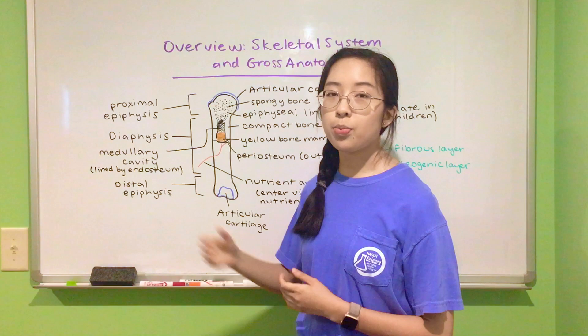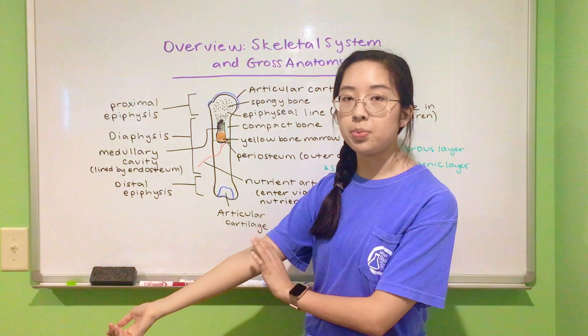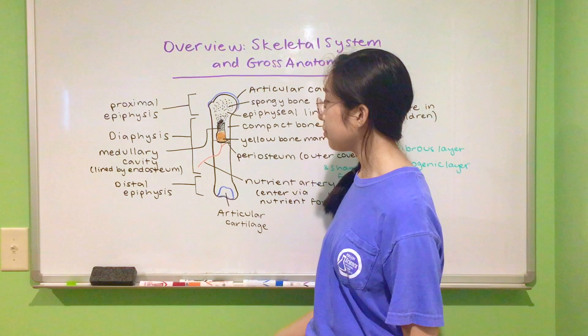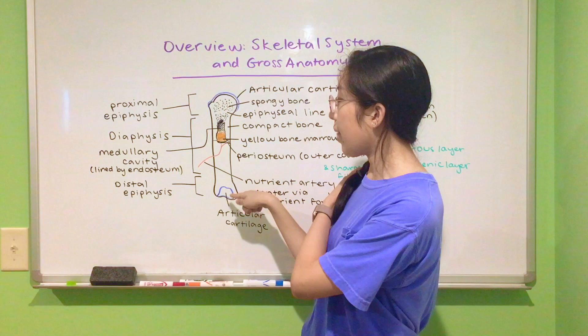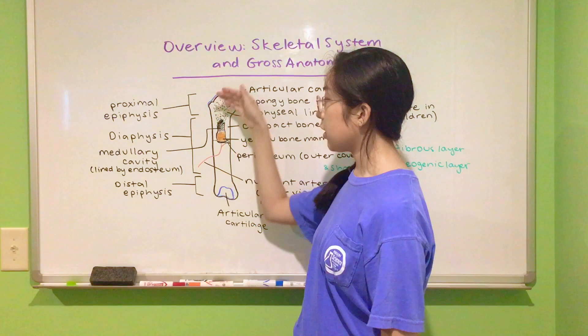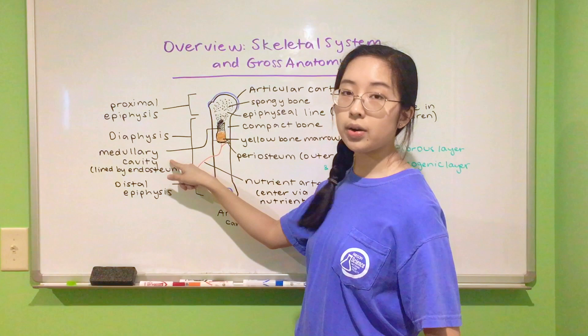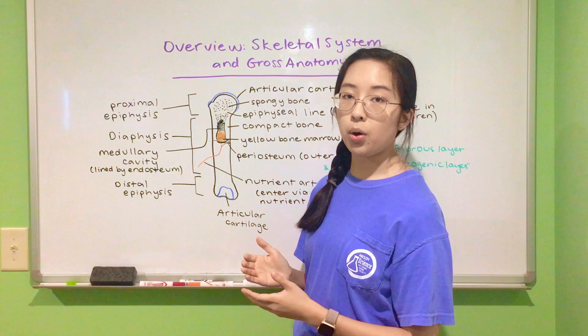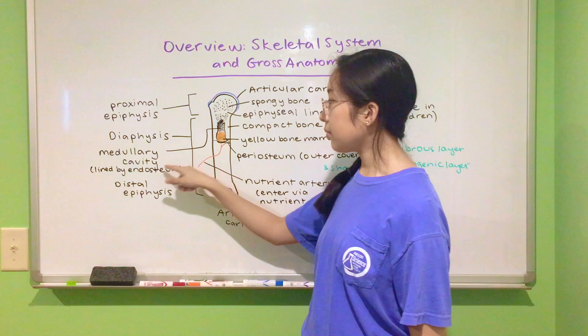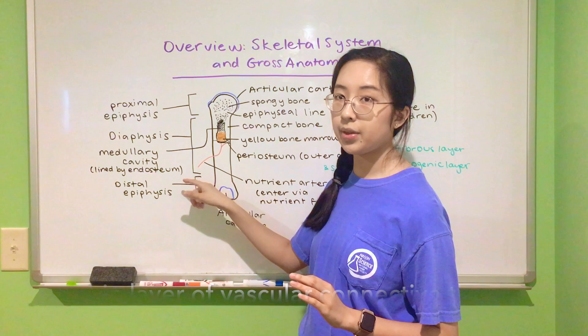As you may recall from directional terms, the humerus attaches into the shoulder girdle proximally and articulates with the radius and ulna distally. If we slice off part of the bone to show the interior, in the middle of the diaphysis we have the medullary cavity — there's actually empty space in the middle of the bone, filled with yellow bone marrow in the case of the humerus. The medullary cavity is lined by a thin layer of cells called the endosteum.